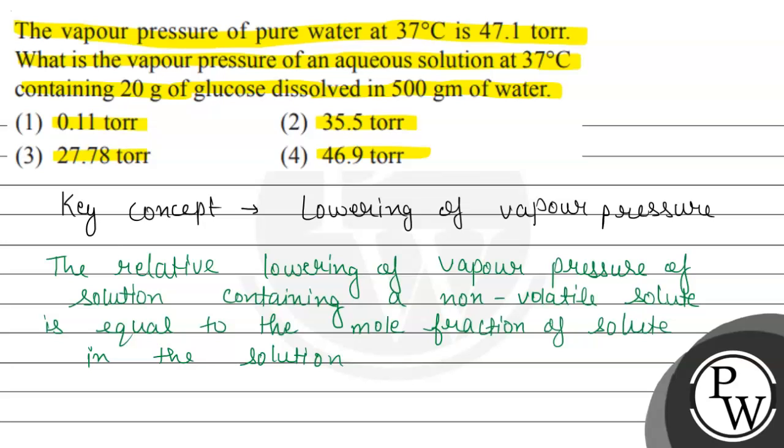The equation will be P0 minus PS divided by P0 equals the moles of solute divided by moles of solution. Here P0 represents the vapor pressure of pure solvent, and PS represents the vapor pressure of solution. We have to calculate this PS.